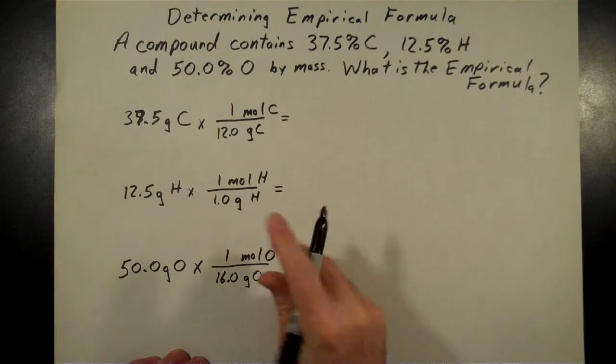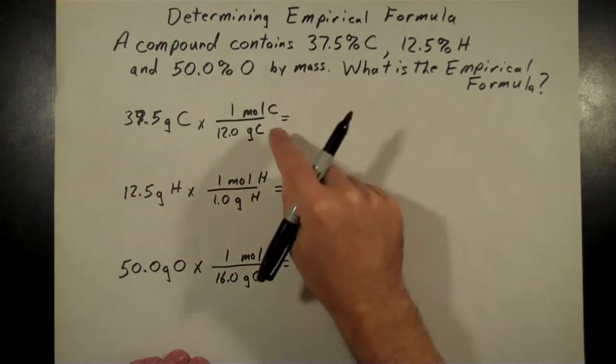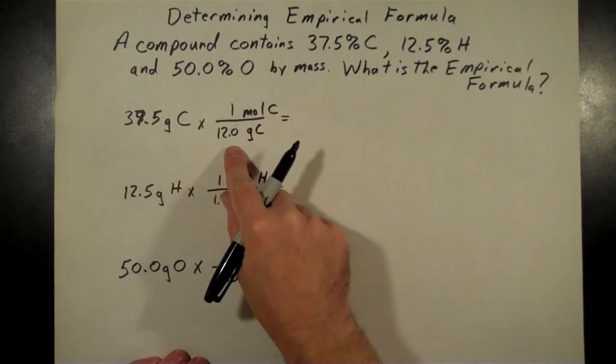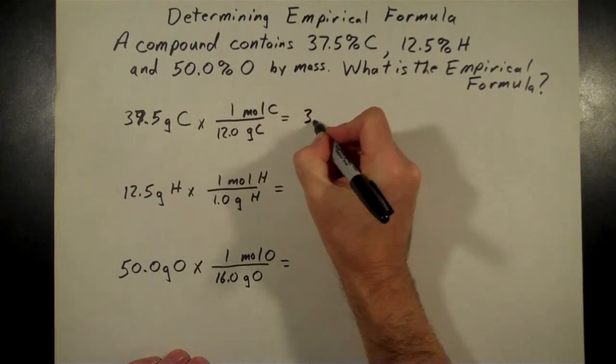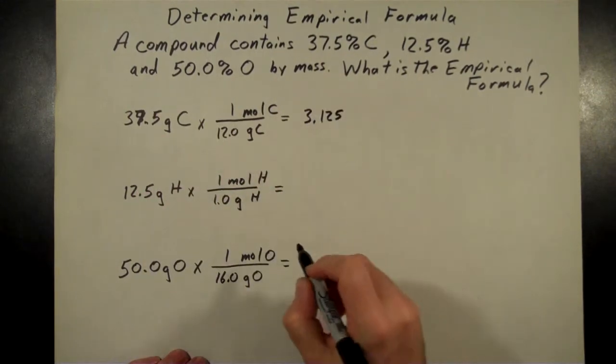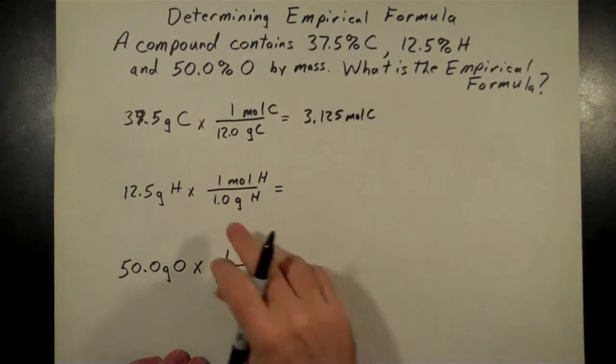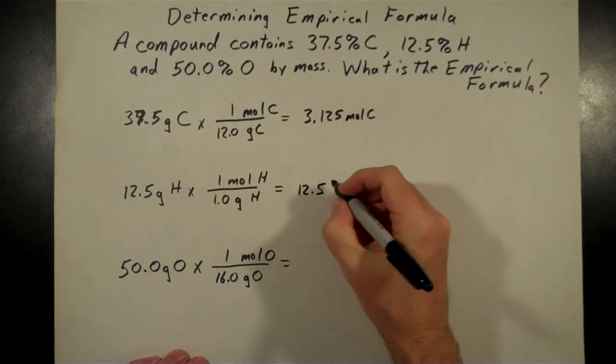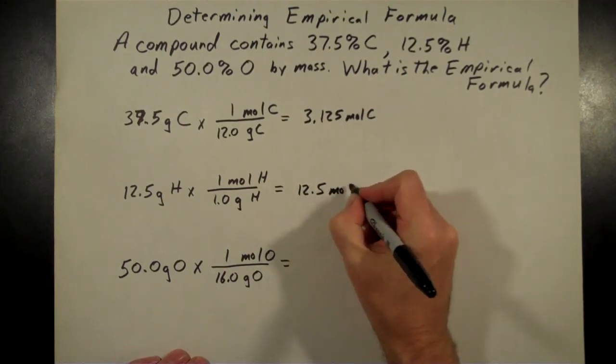All right. And so when we do our division, then we're going to take each of these values, divide by the molar mass for that. 37.5 divided by 12 comes out to 3.125. That's moles of carbon. And then 12.5 divided by 1 is just going to be 12.5. That's now moles of hydrogen.